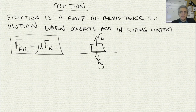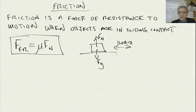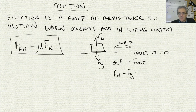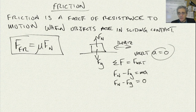The objects in these problems are usually only going to have motion in the horizontal direction. That means the vertical acceleration is going to be zero. So if we take the sum of forces in the vertical direction, we get normal force minus Fg equals ma, but since a is zero, this equals zero. Therefore, the normal force must equal the gravity force.